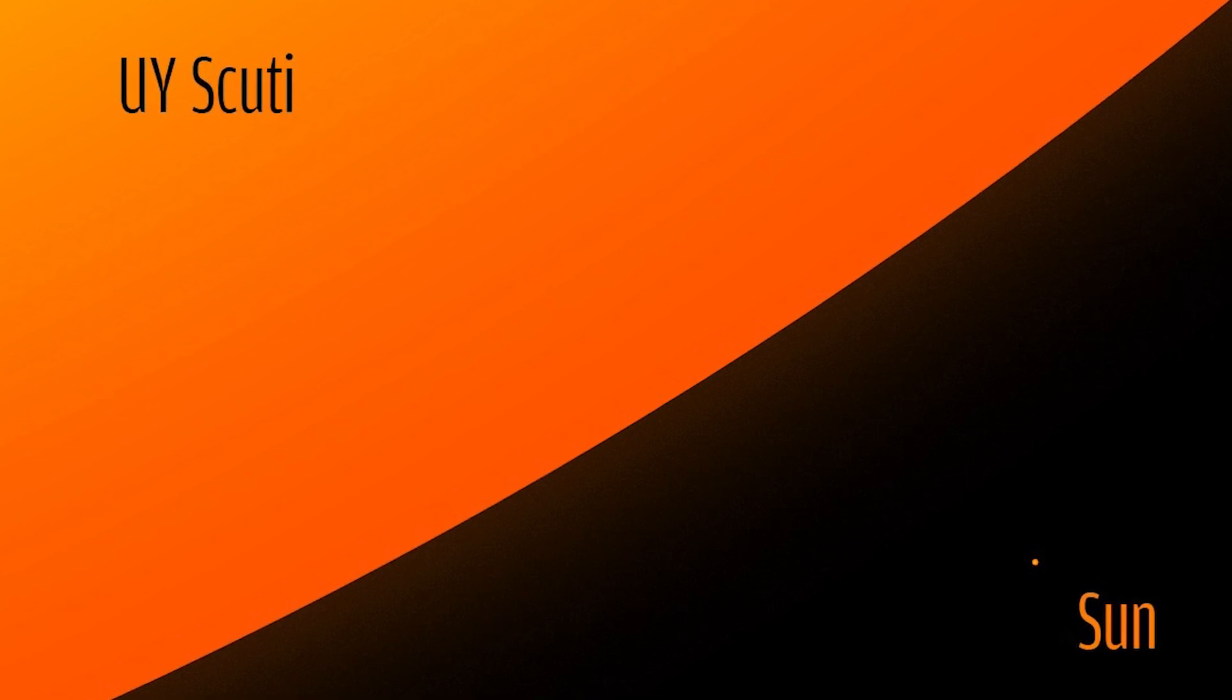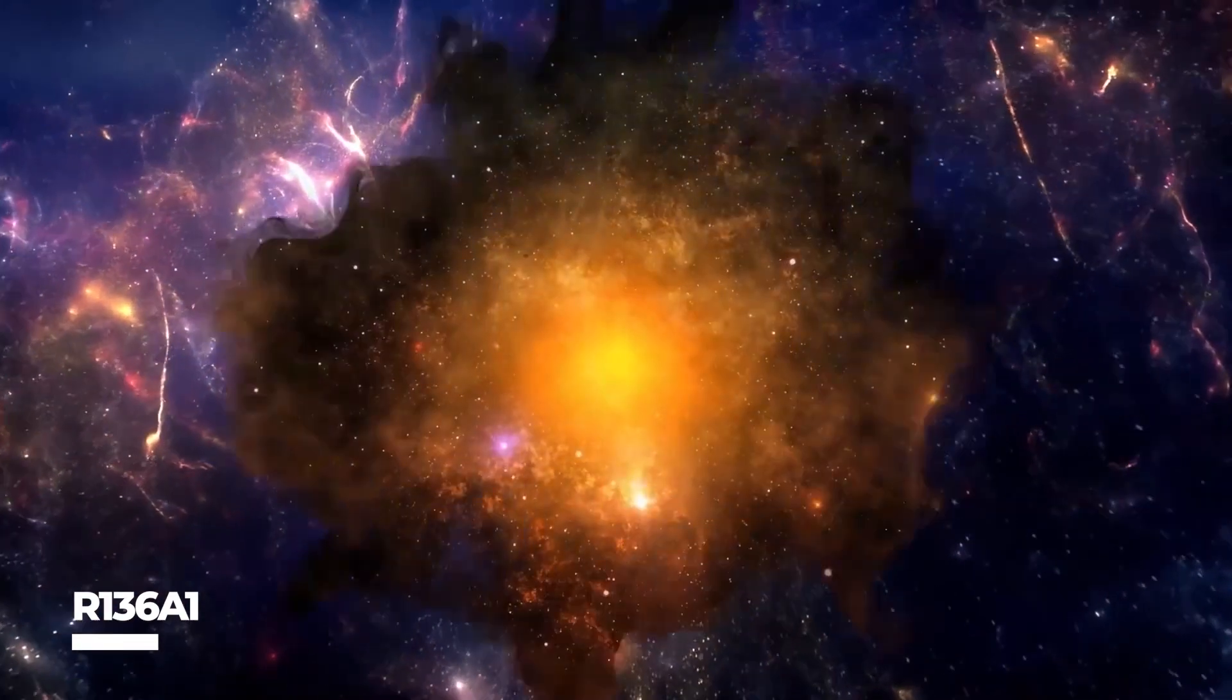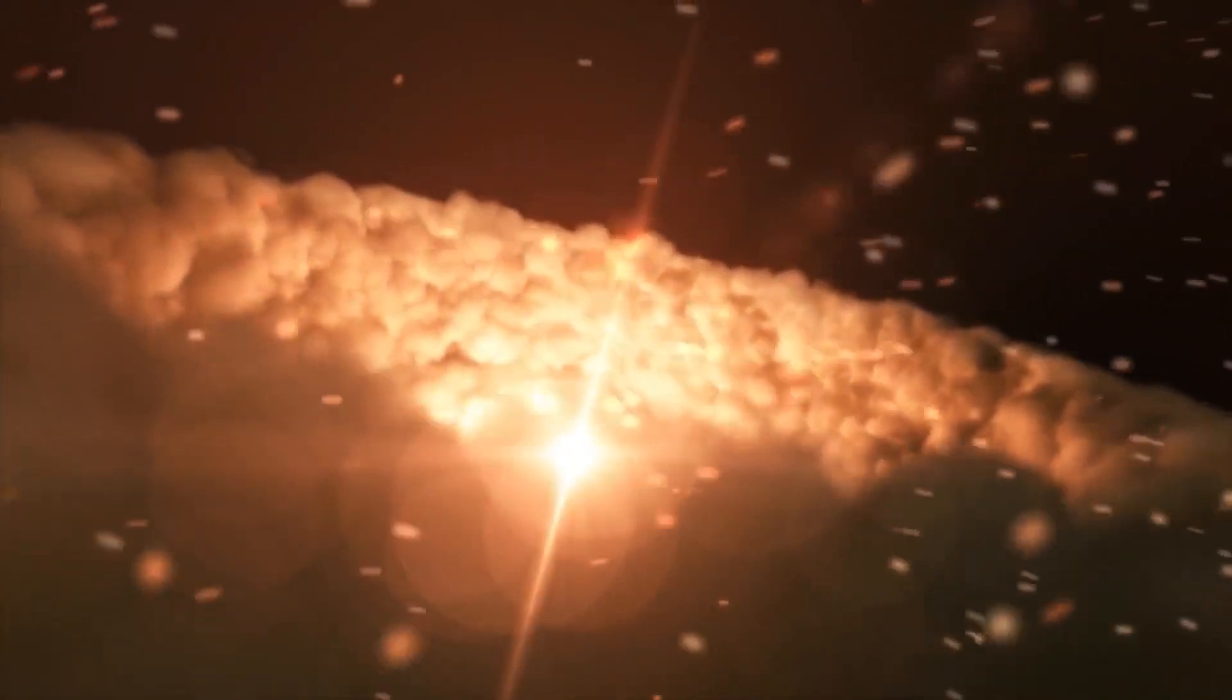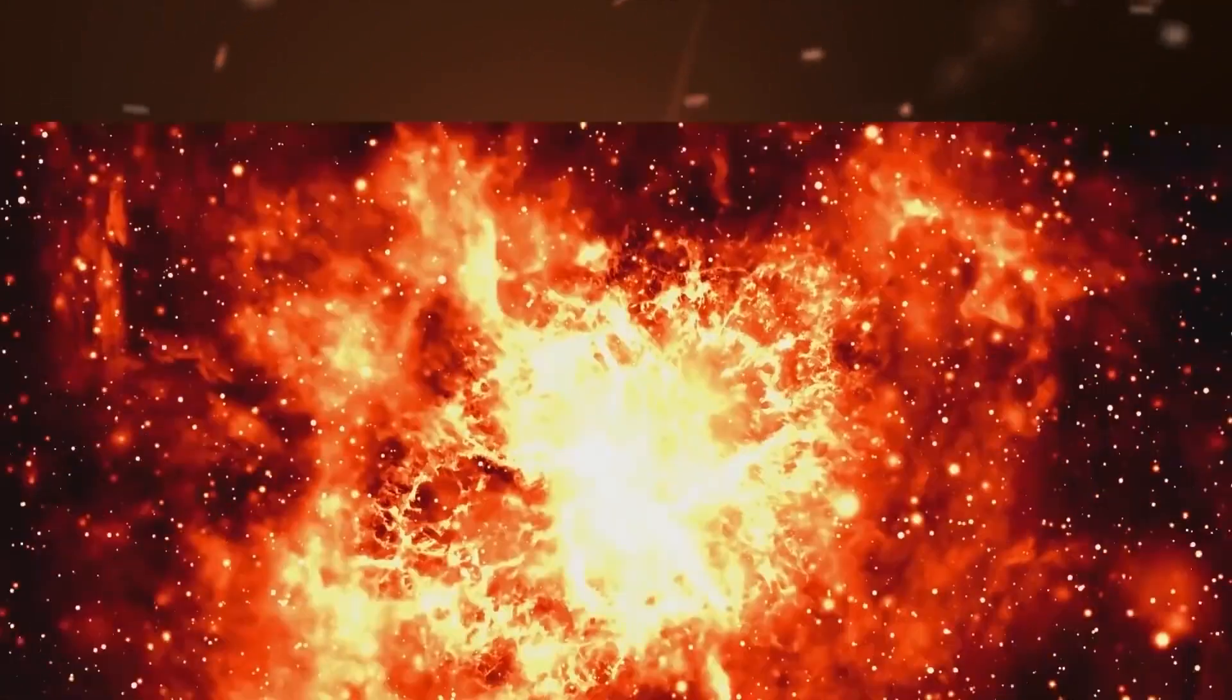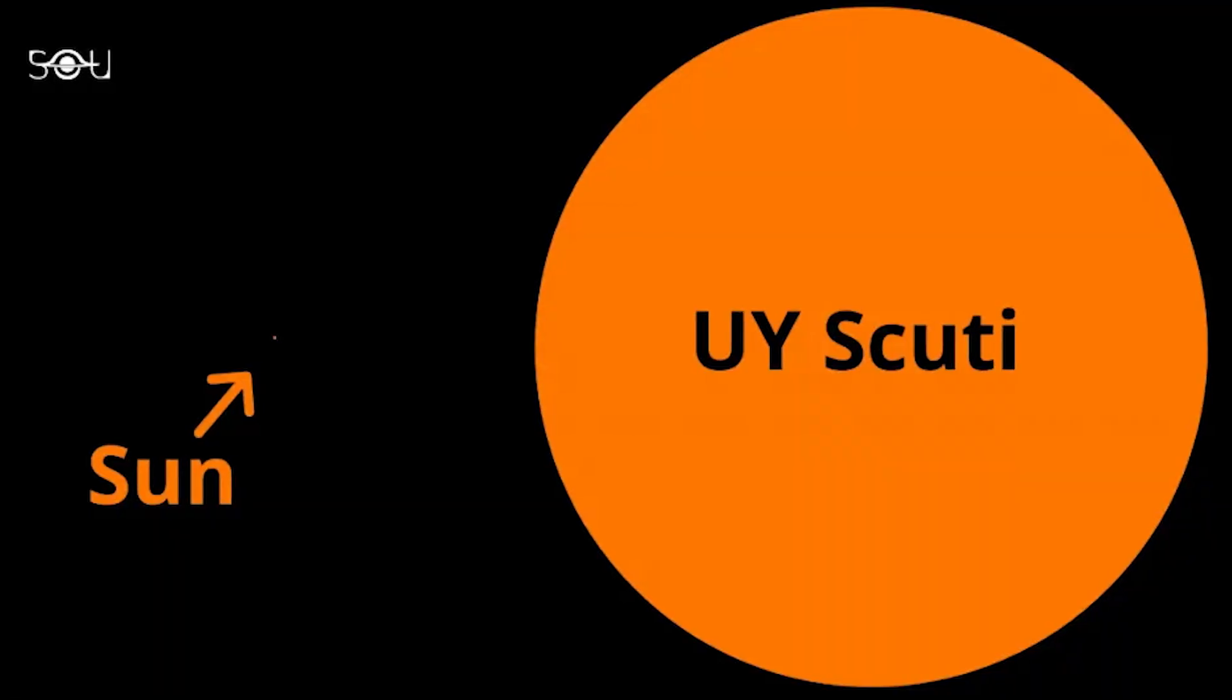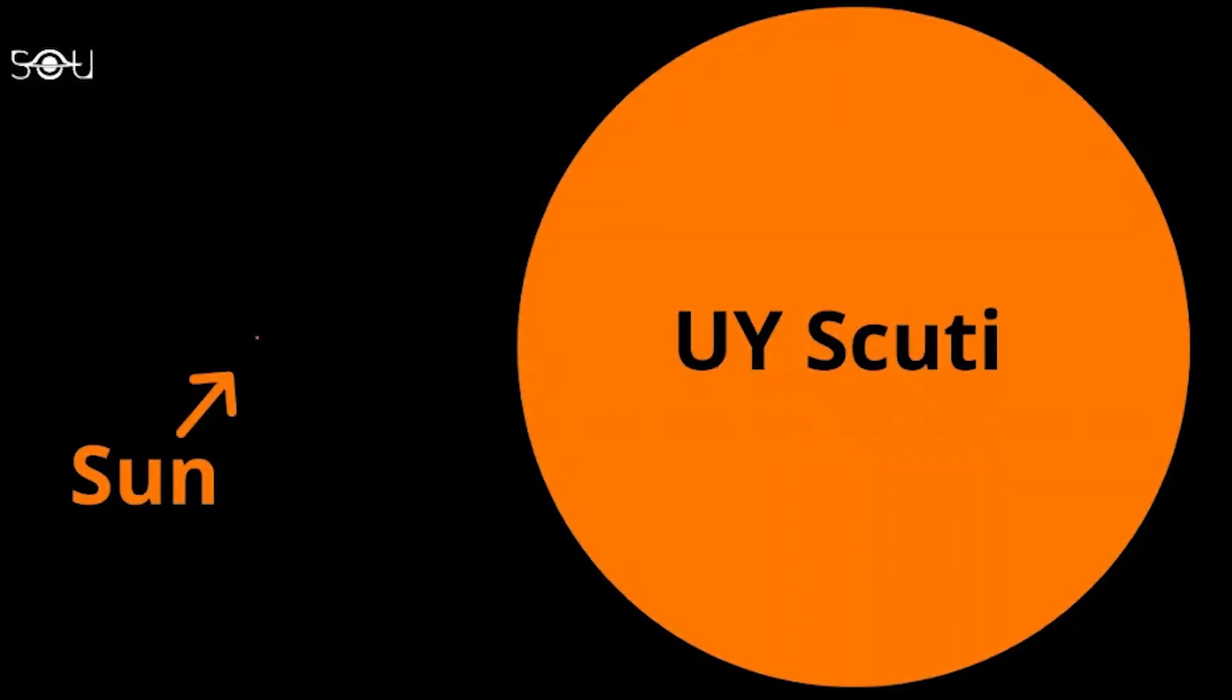UY Scuti is not the most massive or heavy star despite having a large radius. This distinction belongs to R136A1, a star with a mass of around 300 times that of the Sun, but a radius of just about 30 solar radii. UY Scuti has a mass that is only roughly 30 times that of the Sun, but a volume that is far larger.